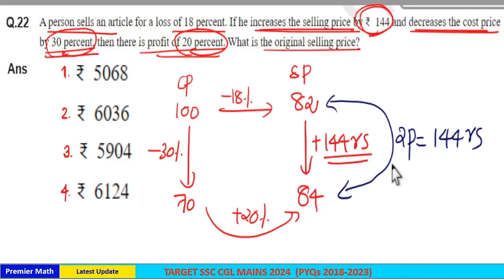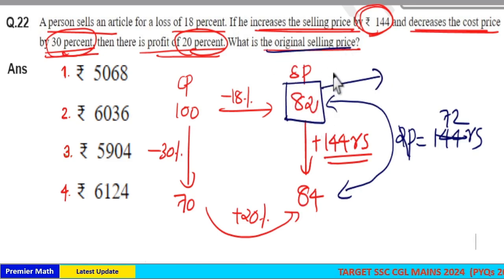And here it is 82 and 84 difference is two parts. Two parts is 144 means one part is equal to Rs. 72. If one part is Rs. 72, we need original selling price which is 82 parts. So, 82 into 72 is original selling price which is equal to 2 into 2, 4. 7 into 2, 14 plus 8 into 2, 16.